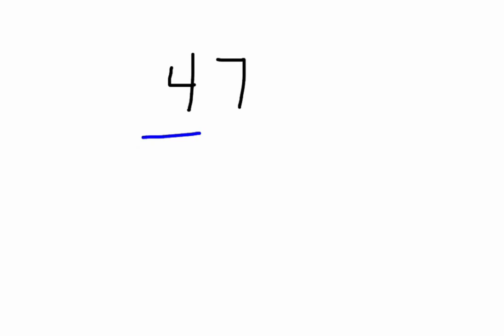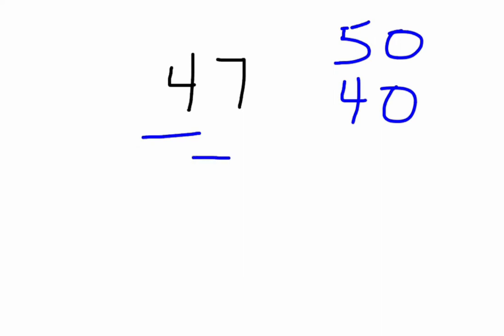Let's think about what our answer choices could be. If we're going to round up, this four could become a five. If we're going to round down, then it's just going to stay four. And then everything ends in a zero when we round — every digit to the right of that underlined digit is going to be changed to a zero. So all of our answers when we round are going to end in zero, and our only choices are 50 or 40.